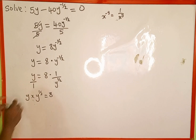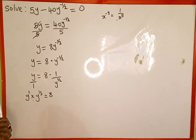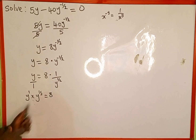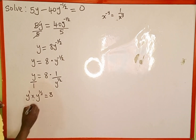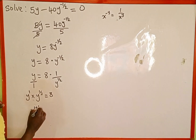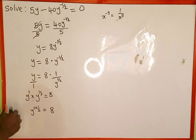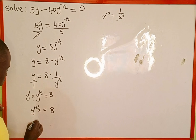This y here can also be written as y to the power of 1. We recall the multiplication property of indices: when the bases are the same and there is multiplication, we write one of the bases then add the powers — 1 plus 1 over 2 — which is going to give us 3 over 2.